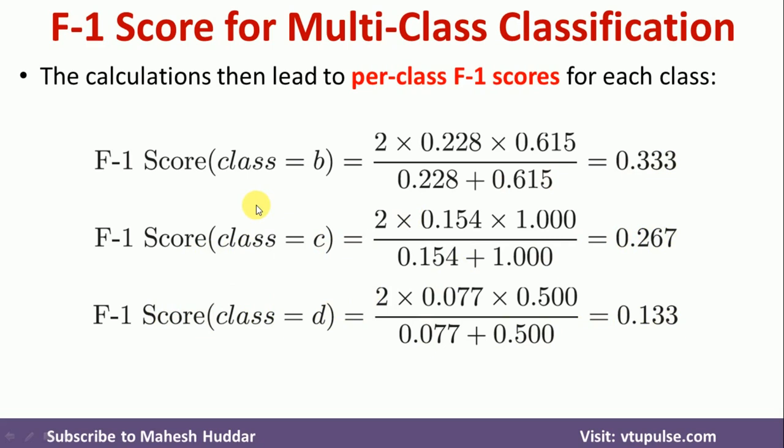This is the simple process we need to follow to calculate the F1 score for multi-class classification. In binary classification we get one overall F1 score for the entire dataset, but for multi-class classification we calculate the F1 score separately for every class using a one-versus-rest approach. In this video we have understood how to calculate the F1 score for multi-class classification. If you like the video, please like and share with your friends, press the subscribe button for more videos, and press the bell icon for regular updates. Thank you for watching.